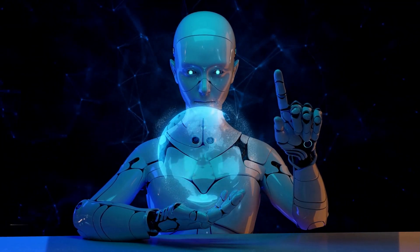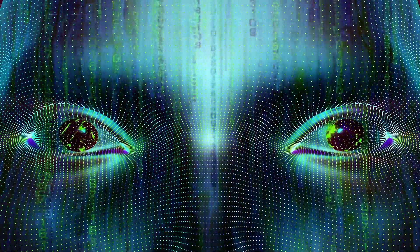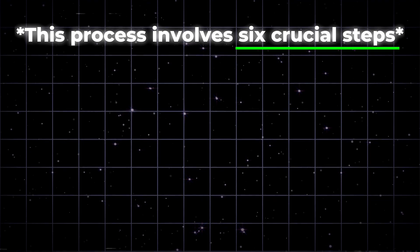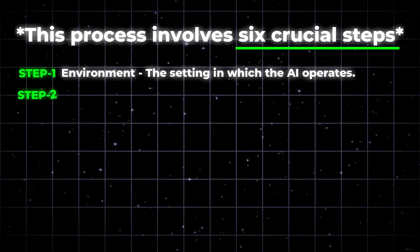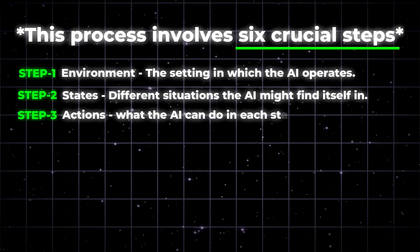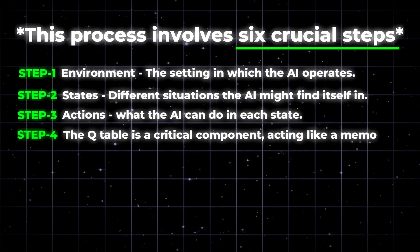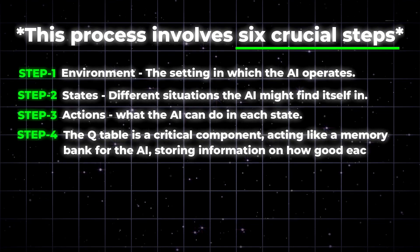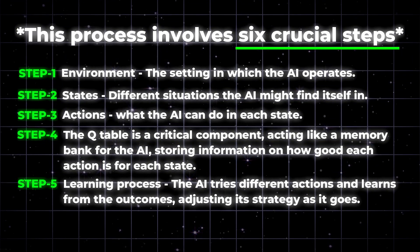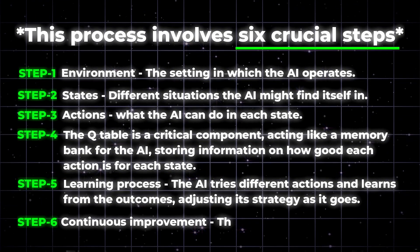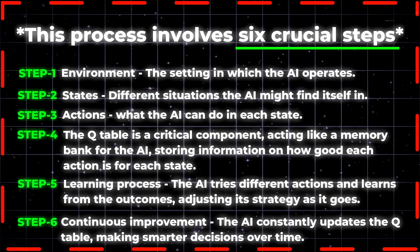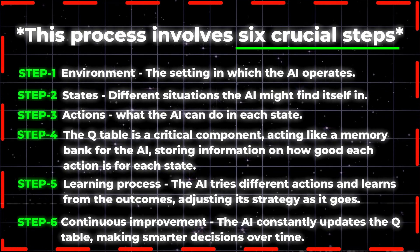Q-learning is based on a simple and intuitive concept: learning from doing, much like humans learn from experience. This process involves six crucial steps. First, there's the environment — the setting in which the AI operates. Then come the states, the different situations the AI might find itself in. Third are actions — what the AI can do in each state. The Q-table acts as a memory bank, storing how good each action is per state. Fifth is the learning process, where the AI tries actions and adjusts strategy. Finally, continuous improvement — the AI constantly updates the Q-table, making smarter decisions over time.